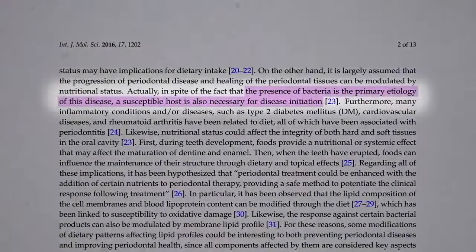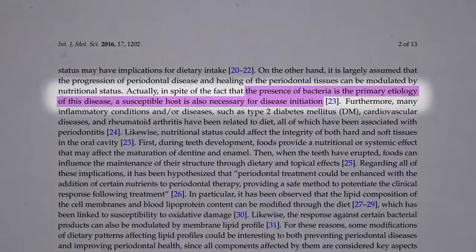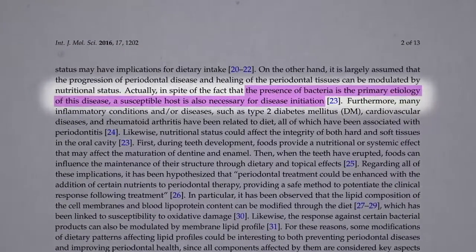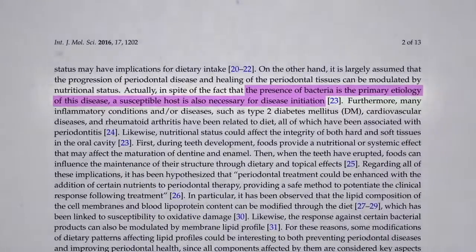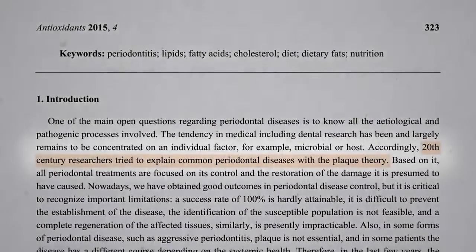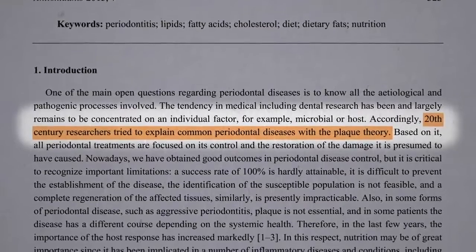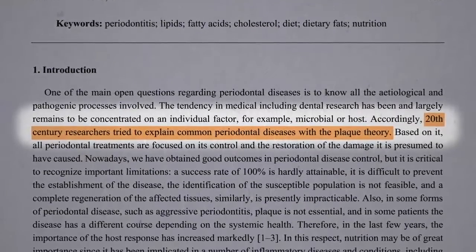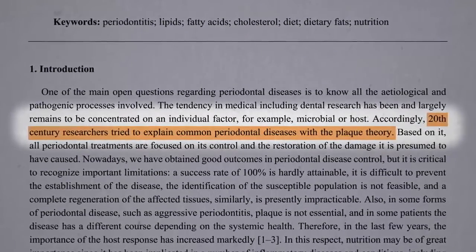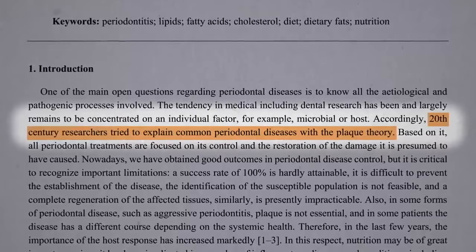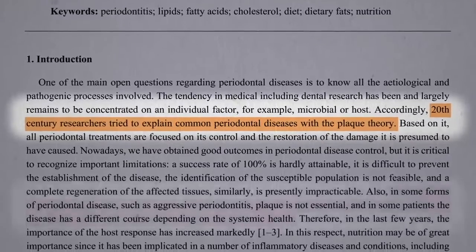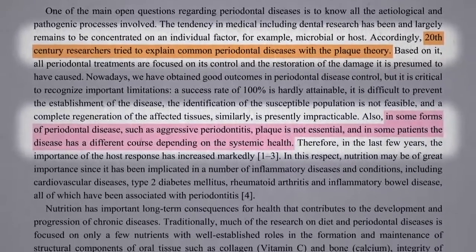The presence of bacteria is the primary cause, but a susceptible host is also necessary for disease initiation. The standard explanation of periodontal disease is the plaque theory. The buildup of plaque leads to gingivitis — gum inflammation — which leads to periodontitis, inflammation lowered down beneath the gums.